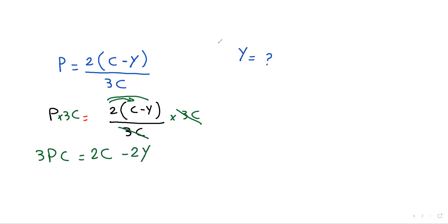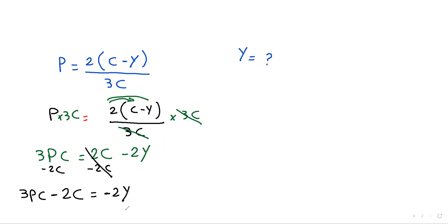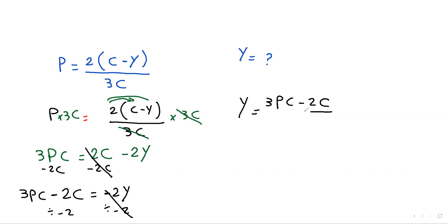The next step: subtract 2c from both sides. Cancel them out, so 3pc minus 2c equals negative 2y. Divide both sides by negative 2, because we want y not negative y. So y equals 3pc minus 2c all divided by negative 2.